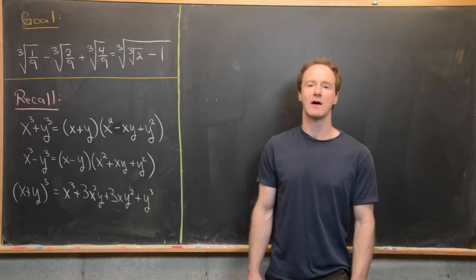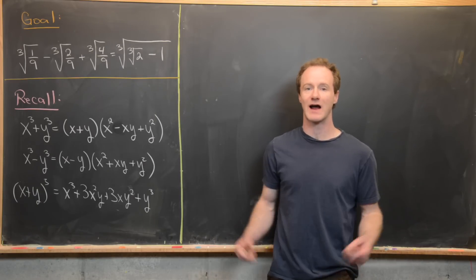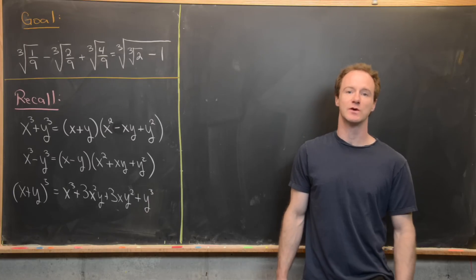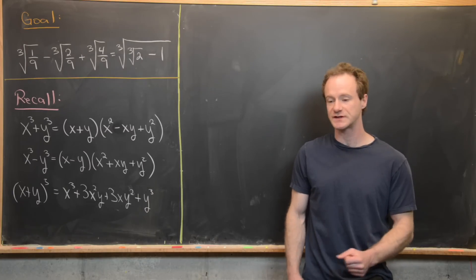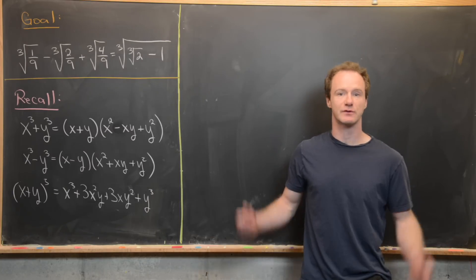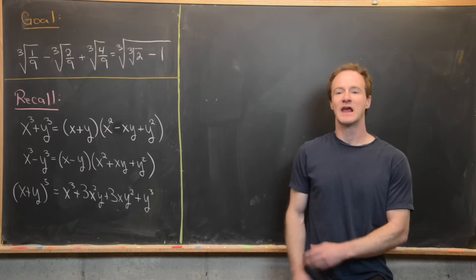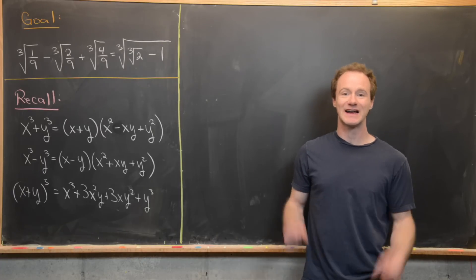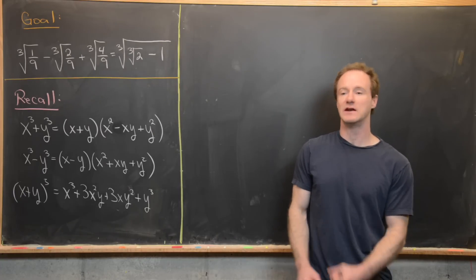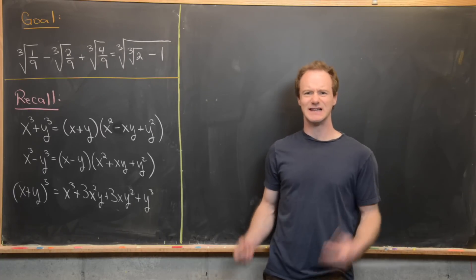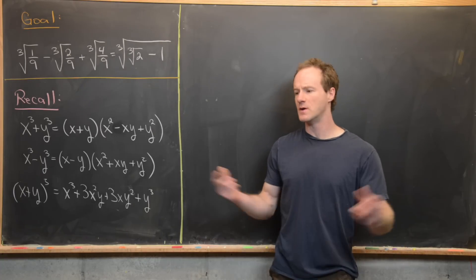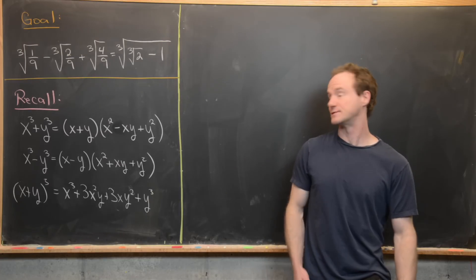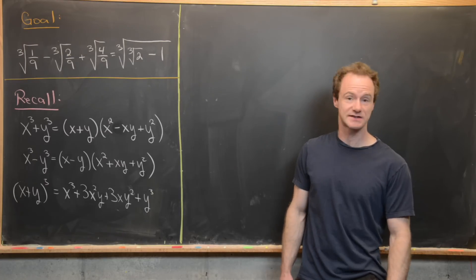Here we're going to look at two quick little problems involving radicals. The first one is going to involve denesting cube roots and it's due to Ramanujan. The second one has to do with a finite sum involving radicals, adapted from a problem seen on various problem solving type tests.